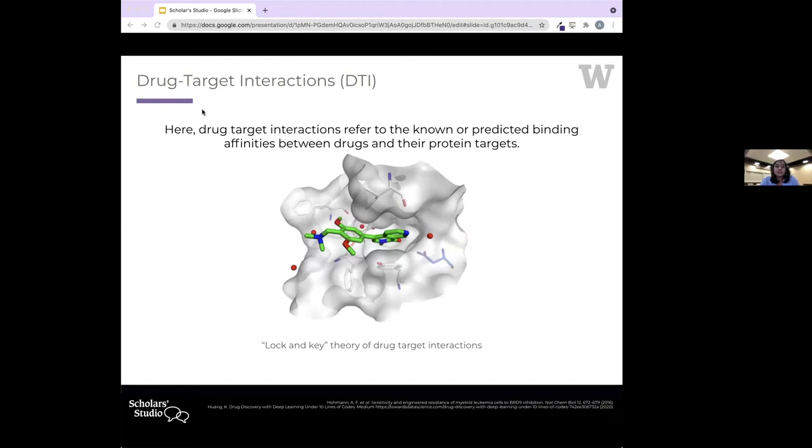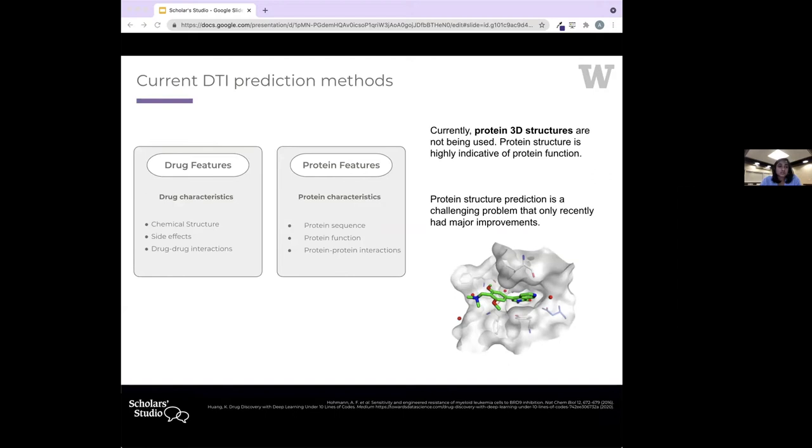Here, I'm defining drug target interactions as the interaction and/or affinities between a specific target or protein target, which is the gray molecule, and a specific drug, which is the green molecule. Part of the most important aspects of understanding these interactions is the 3D structure of the protein, or how a protein folds.